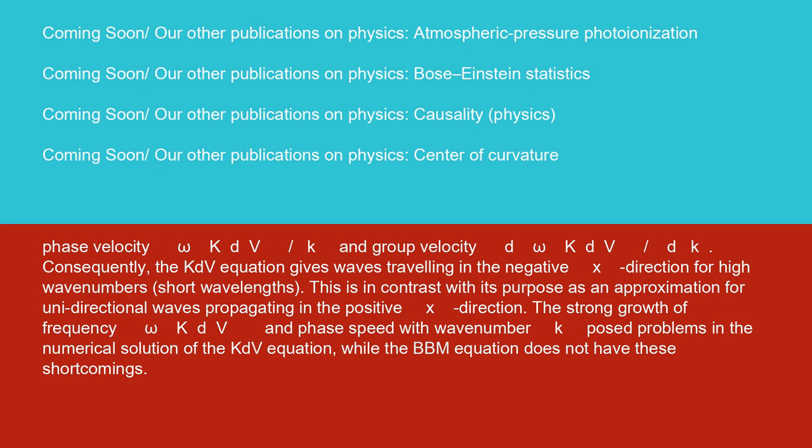This is in contrast with its purpose as an approximation for unidirectional waves propagating in the positive x direction. The strong growth of frequency omega KdV and phase speed with wave number k pose problems in the numerical solution of the KdV equation, while the BBM equation does not have these shortcomings.